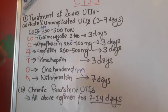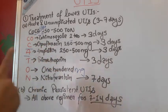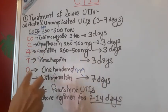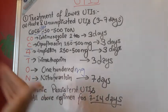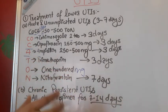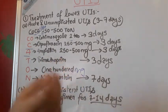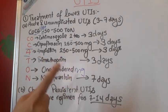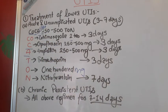According to the mnemonic: CO — cotrimoxazole two tablets; C — ciprofloxacin 250–500 mg; A — ampicillin 250–500 mg; T — trimethoprim 100 mg; N — nitrofurantoin 100 mg. For chronic persistent UTIs, write the same drug regimen but change the duration to seven to fourteen days. This concludes the treatment of lower UTIs.